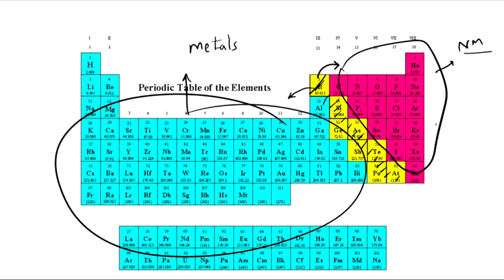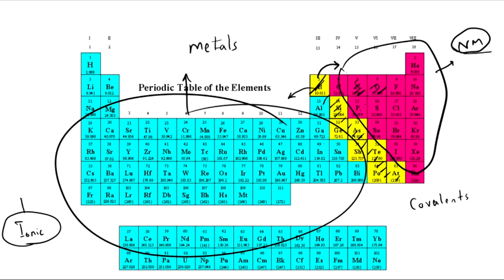We focus on only non-metals — elements placed on the right side of the periodic table shown in pink. Whenever we make covalent compounds, we combine any two of these non-metals. The number of covalent compounds is significantly fewer than the number of ionic compounds. That is why we call ionic compounds salts, and we have many salts in our daily life.